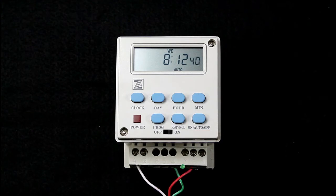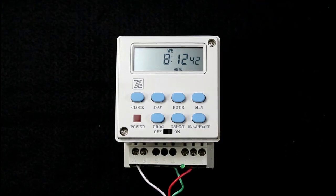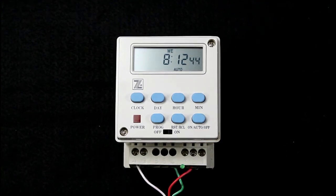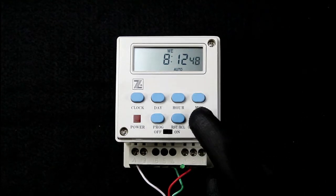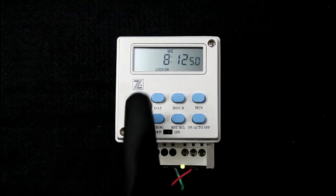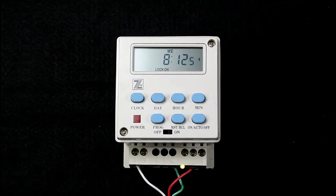In auto, the relay will cycle on and off based on the programmed cycles that have been entered into the timer. If you press the on, auto, off button and change it from auto to lock on, the relay will lock on and it will remain on indefinitely.